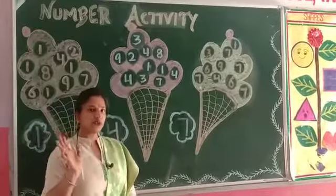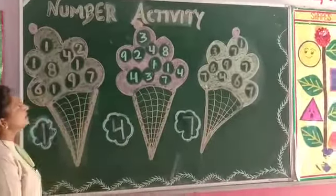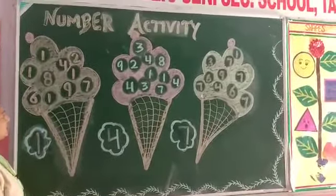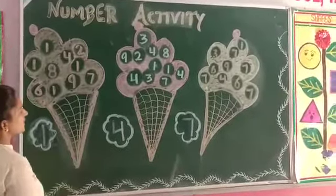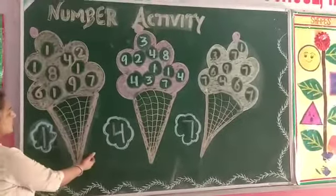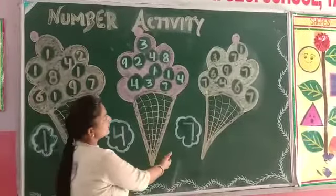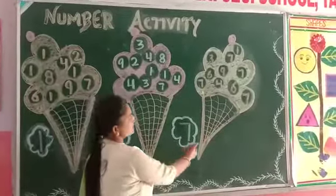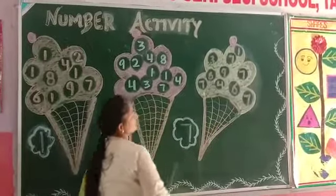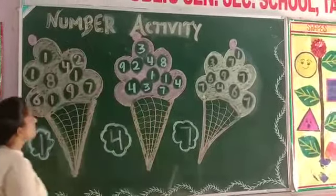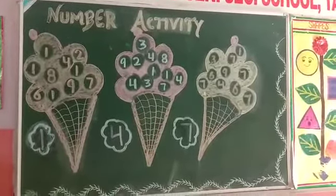Hello kids, today we are going to start a number activity. There are 3 flavors of ice cream: first chocolate ice cream, second strawberry ice cream, and third mango ice cream. There are some numbers in these ice creams.